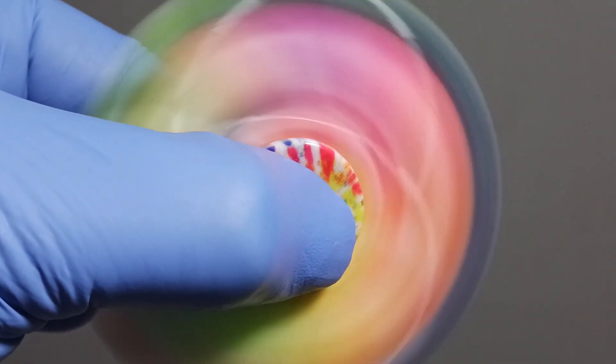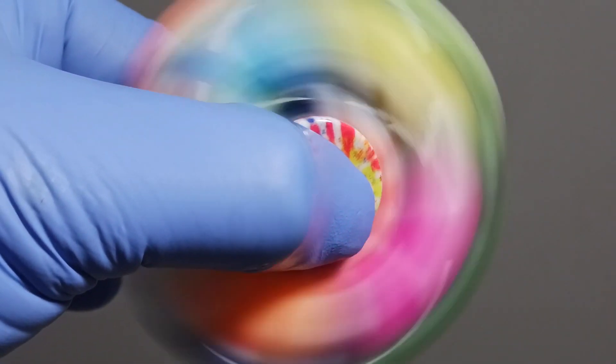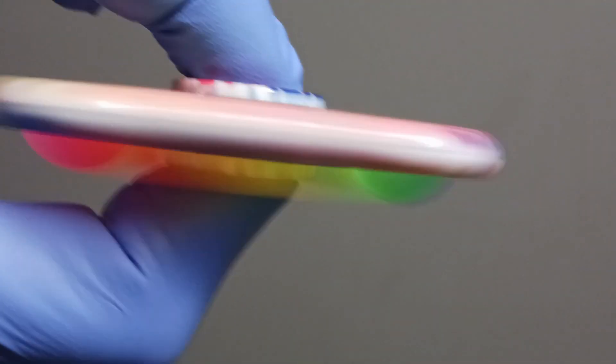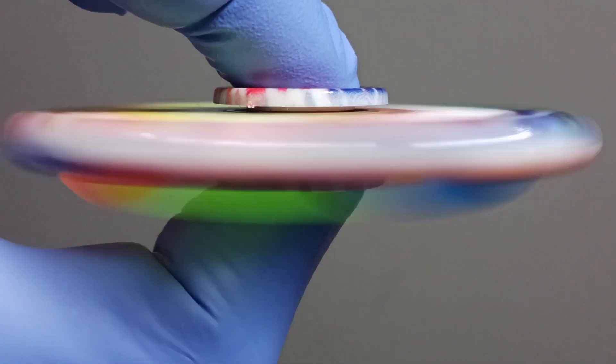The design of the fidget spinner also plays a crucial role in its performance. The multi-prong design ensures that the spinner is well balanced and can spin for a longer time without wobbling or falling. Additionally, the central bearing is made from materials with low friction, such as ceramics or stainless steel, to reduce the drag on the spinner.